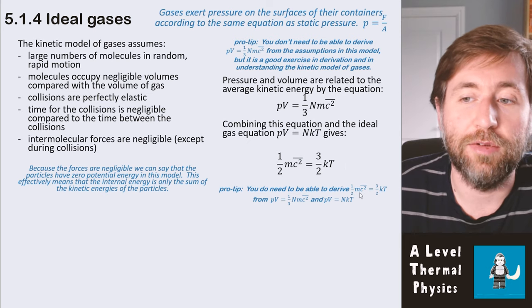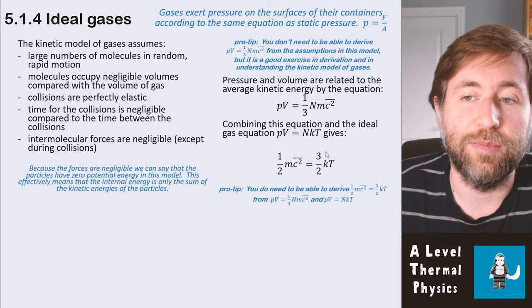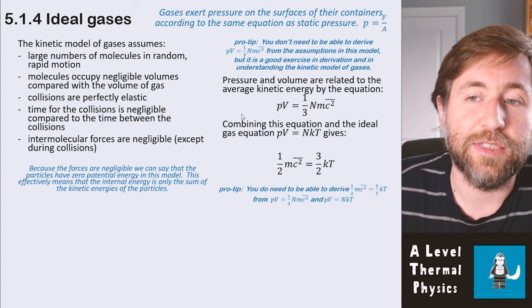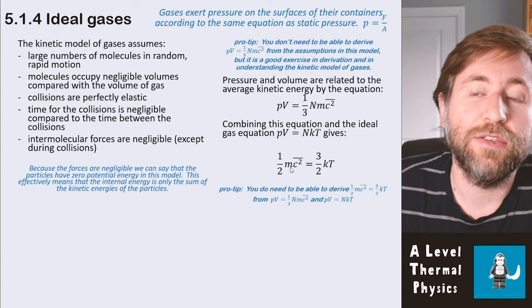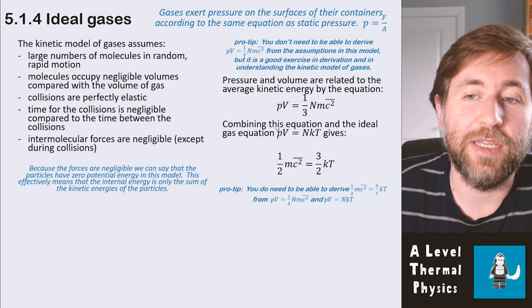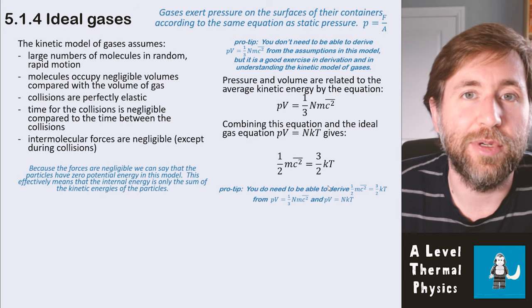So that is the average kinetic energy of the molecules, is equal to 3/2 kT. And that's the Boltzmann constant times absolute temperature again. And you do need to be able to derive that from the previous two equations. So you need to be able to take these two equations from the ideal gas molecule and derive this third. You should probably see that's a case of making them equal to each other and doing a little bit of rearranging.